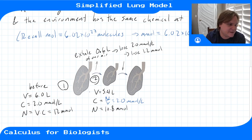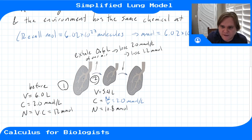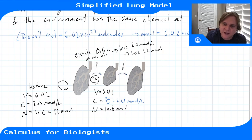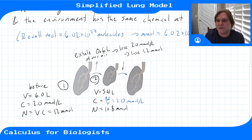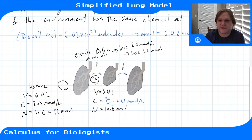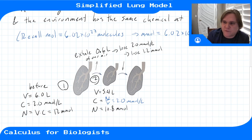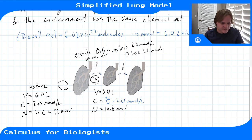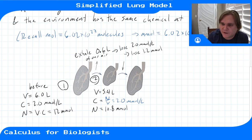The concentration stays the same between step 1 and step 2 even though the volume changed. That's our well-mixed assumption: we're not losing only the top part of the air. We lose 0.6 liters, but we lose the same concentration throughout, so the concentration is preserved even though we did lose molecules overall.